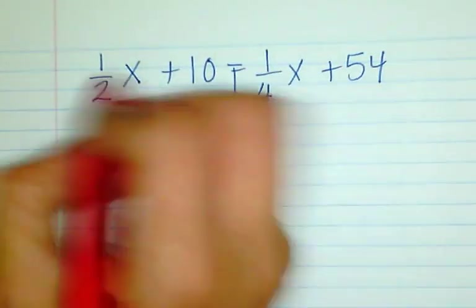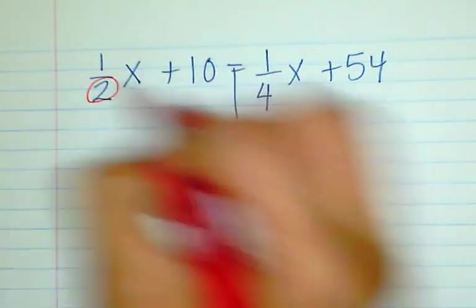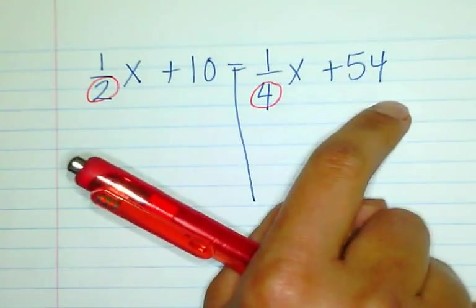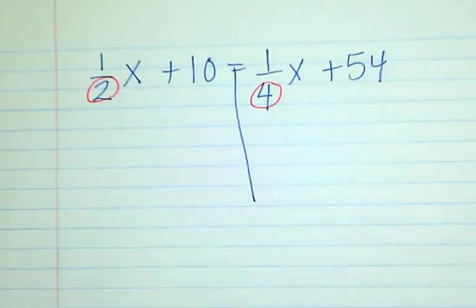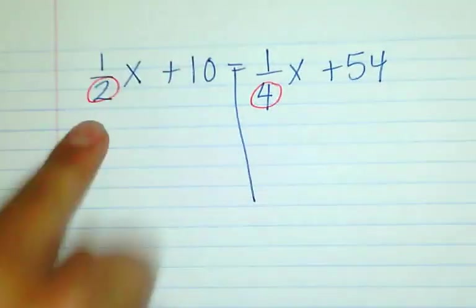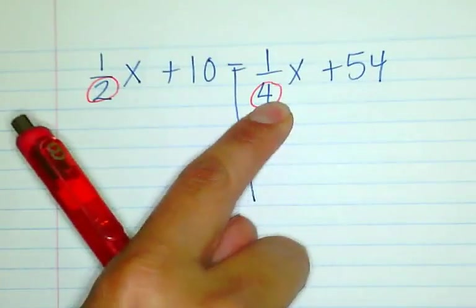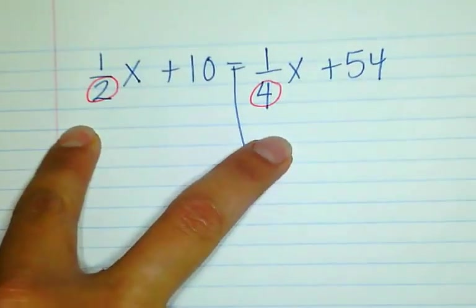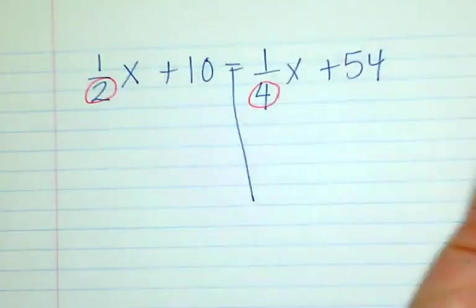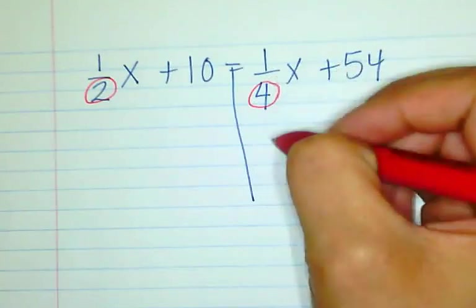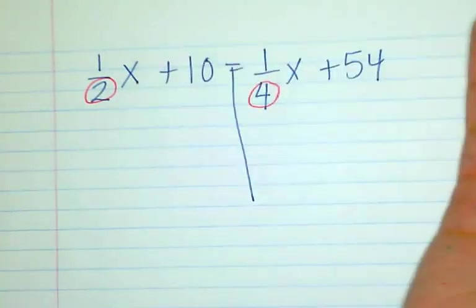Here I noticed that the denominators are 2 and 4. So instead of making the other ones a fraction, I'm going to multiply to eliminate the divided-by-2 and divided-by-4, because ultimately a fraction is a division. The inverse of divide-by-2 is to multiply by 2, and the inverse of divide-by-4 is to multiply by 4.